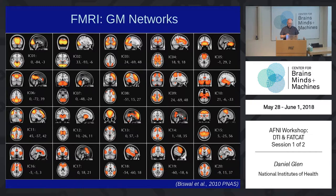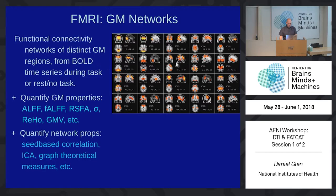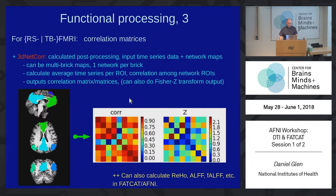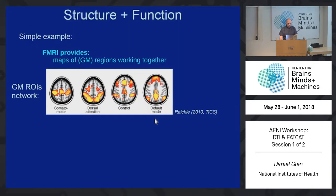We've got networks of gray matter — this is from an ICA analysis. We can quantify various things about the gray matter and put those together. We have correlation and that kind of thing. We'll use these as seed regions.